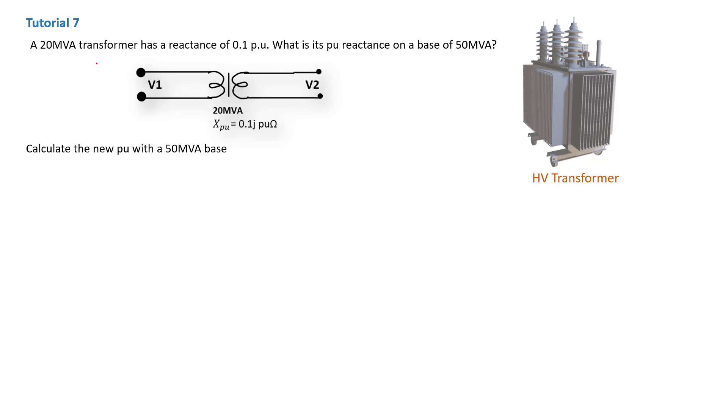In this tutorial, we have a 20 MVA transformer that has a reactance of 0.1 per unit. So that's a per unit reactance of 0.1 for the transformer in front of us. Now they're asking us what is its per unit reactance on a base of 50 MVA. So in this case, the 0.1 per unit reactance was calculated using the 20 MVA base.